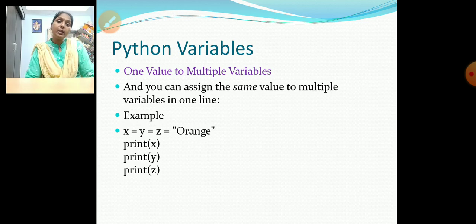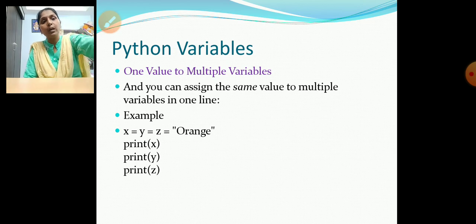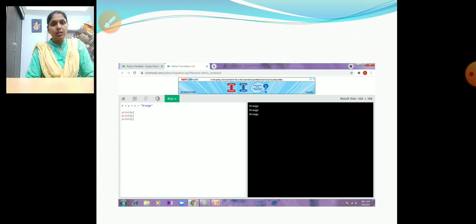We can also assign one value to multiple variables in one line: x = y = z = 'orange'. If you print x, y, z, all variables will have the same value — orange, orange, orange. That is, we can assign a single value to multiple variables in a single line.